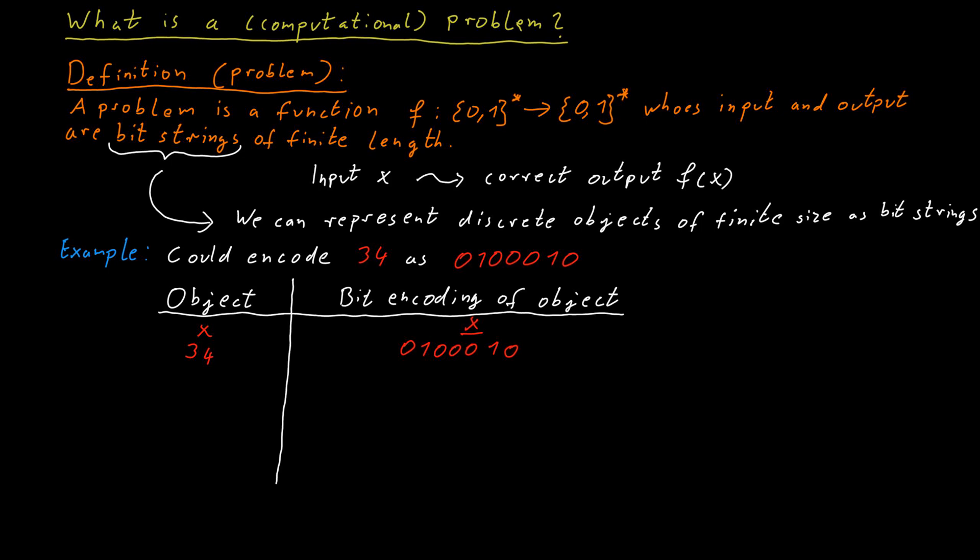At times we also want to look at pairs of objects or a larger number of objects. So for example, we might want to have two numbers as an input to our problem. So if we want to have numbers x and y as input to our problem, we can encode them in a single bit string. We will write this as x, y put into these angled brackets.